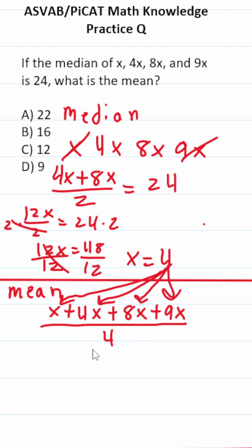To find the mean, you add up all the numbers and divide by how many there are. There are four numbers in this case. So this becomes 4 plus 16 plus 32 plus 36 divided by 4. This is 88 divided by 4, which is 22,